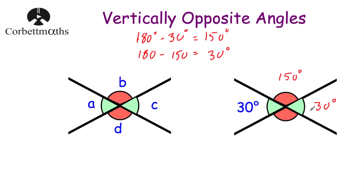Finally we've got this angle at the bottom. There's another straight line here, so if we take our 30 degrees away from 180 degrees we can find the size of this angle. So 180 degrees subtract 30 degrees equals 150 degrees. So this angle at the bottom will be 150 degrees, and that's fantastic because the opposite angles are equal to each other. Whenever we have two straight lines crossing each other, the opposite angles are equal and they're called vertically opposite angles.